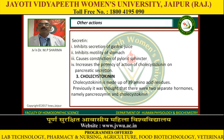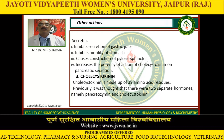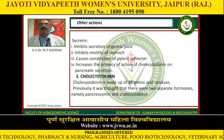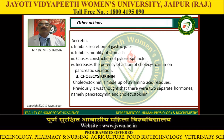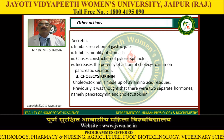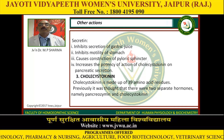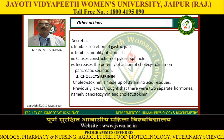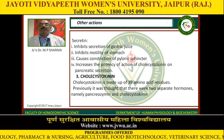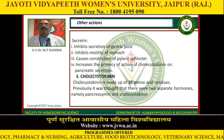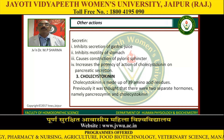Other actions of secretin: it inhibits secretion of gastric juice, inhibits motility of the stomach, causes constriction of the pyloric sphincter, and increases the potency of action of cholecystokinin on pancreatic secretion. Cholecystokinin is made up of 39 amino acid residues. Previously it was thought that there were two separate hormones, namely pancreosimin and cholecystokinin.